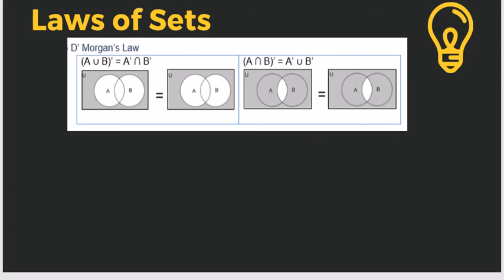We have De Morgan's law. The complement of the union of A and B equals the intersection of A' and B'. And the complement of the intersection of A and B equals the union of A' and B'. In the Venn diagram, A' covers everything outside A; when combined with the full B, we add that region. For the intersection version, only the overlapping complement region is taken.